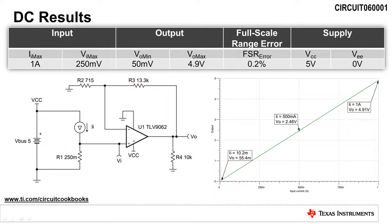A DC sweep of the input current from 10.2 milliamps to 1 amp yields an output voltage from 55.4 millivolts to 4.91 volts. This verifies the functionality of the circuit.